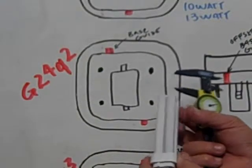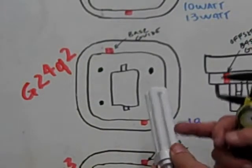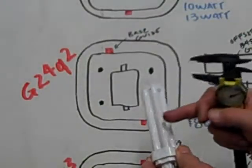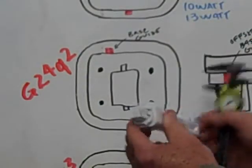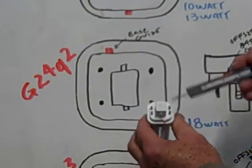compact fluorescent quad. The four tubes denote the quad. And on the base, it has four pins.